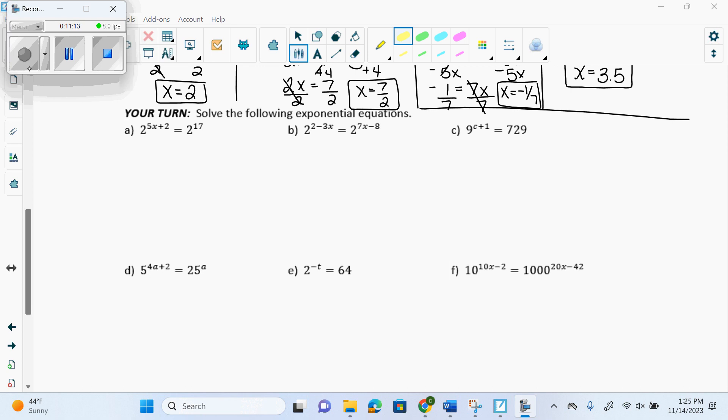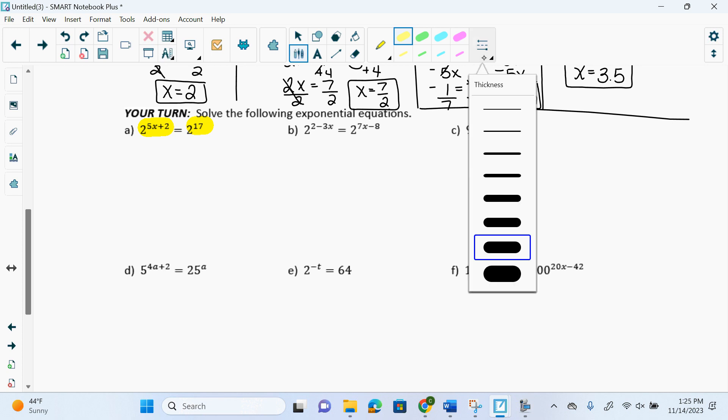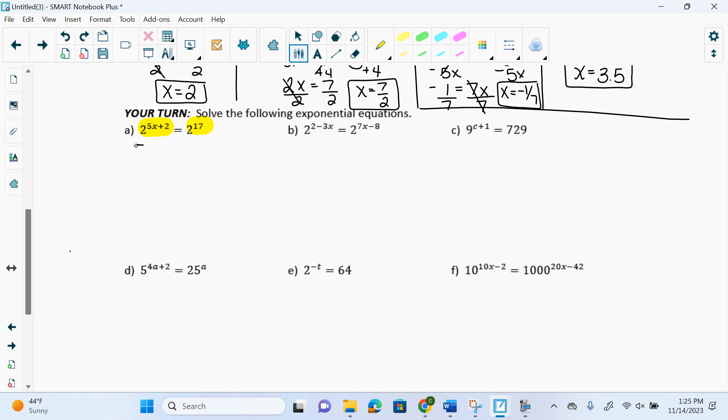We have base 2 and base 2. So we're going to set these equal. Oops, little numbers equal, not the... All right. So I'm going to have 5x plus 2 equals 17. Subtract 2. 5x equals 15. Divide by 5. And x equals 3.